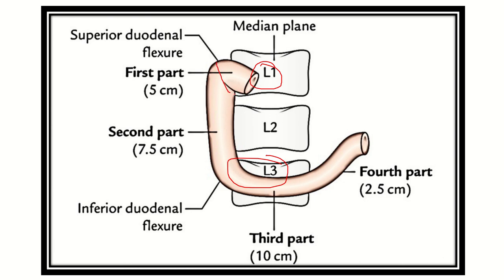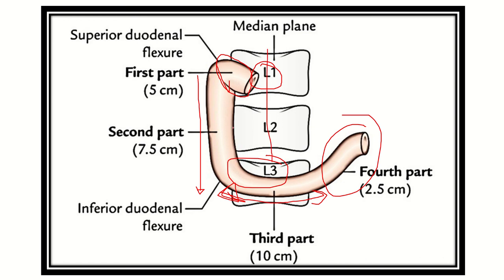In this second picture, we can see the first part — the upper horizontal part — then the second vertical part, then the third horizontal part, and the fourth part. The midline indicates the medial side, and the ampulla of Vater drains into the medial side of the second part of the duodenum.